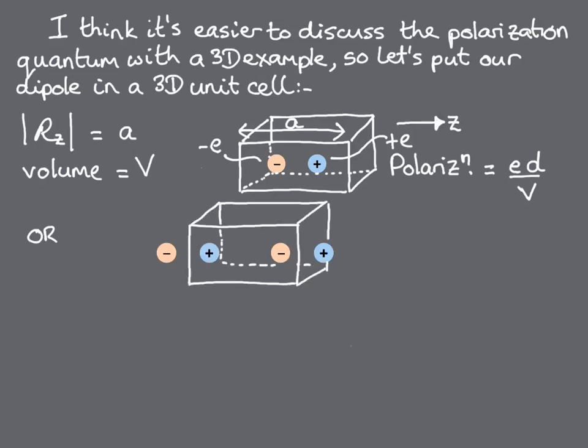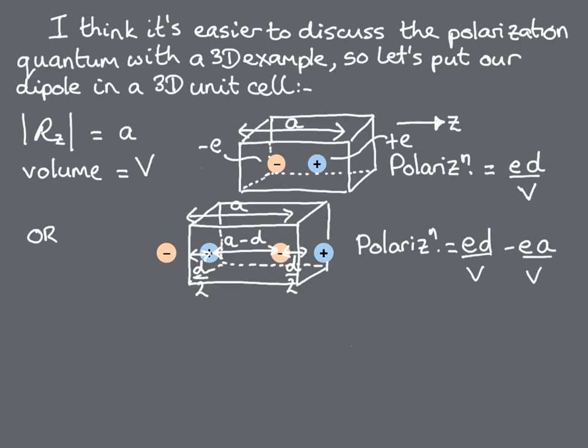If we take this unit cell as our reference, and the left edge of the cell as the zero Z value, then we obtain the value E times D over V minus E times A over V for the polarisation.